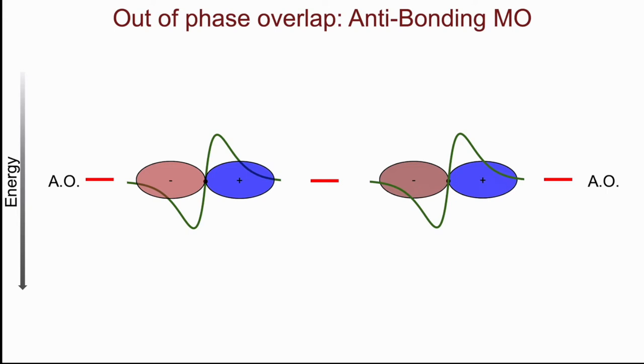In this case, the two constituent atomic orbitals are going to overlap destructively. And so the positive phase of the p orbital on the left is going to overlap with the negative phase of the p orbital on the right. So again, we will bring these in.